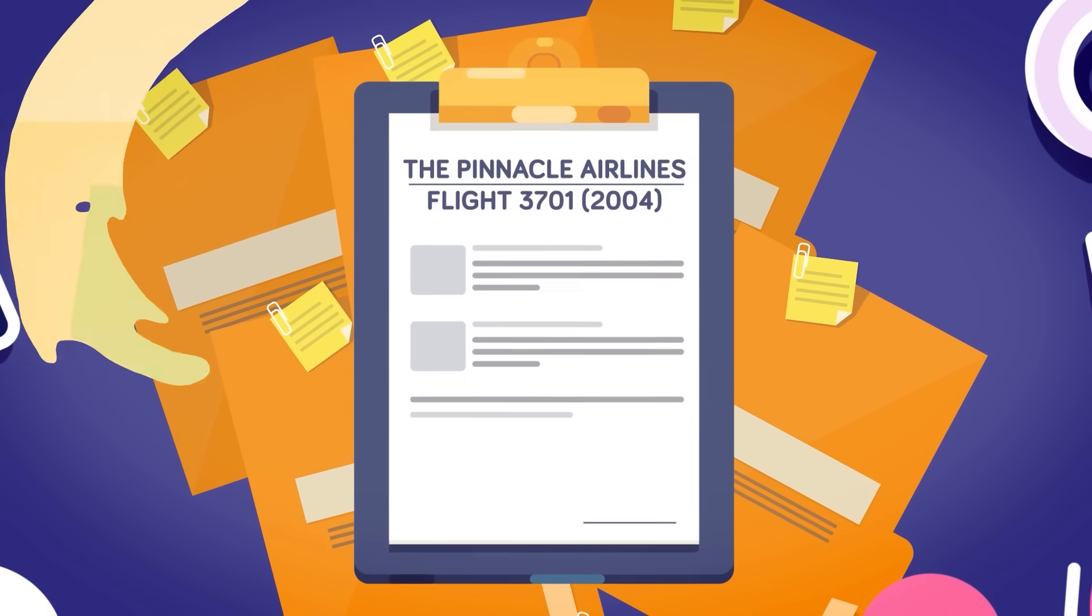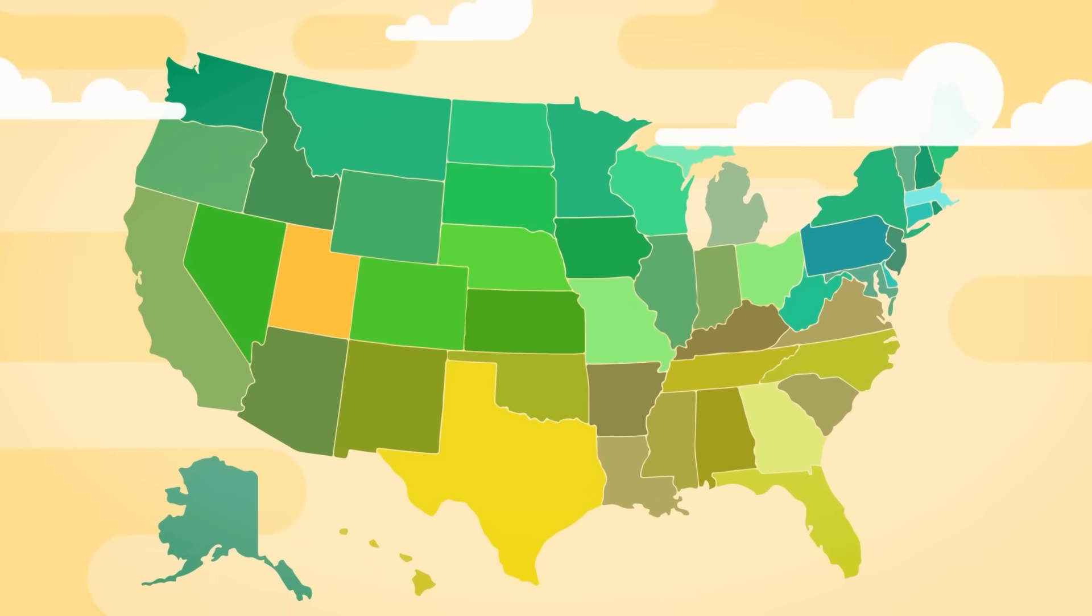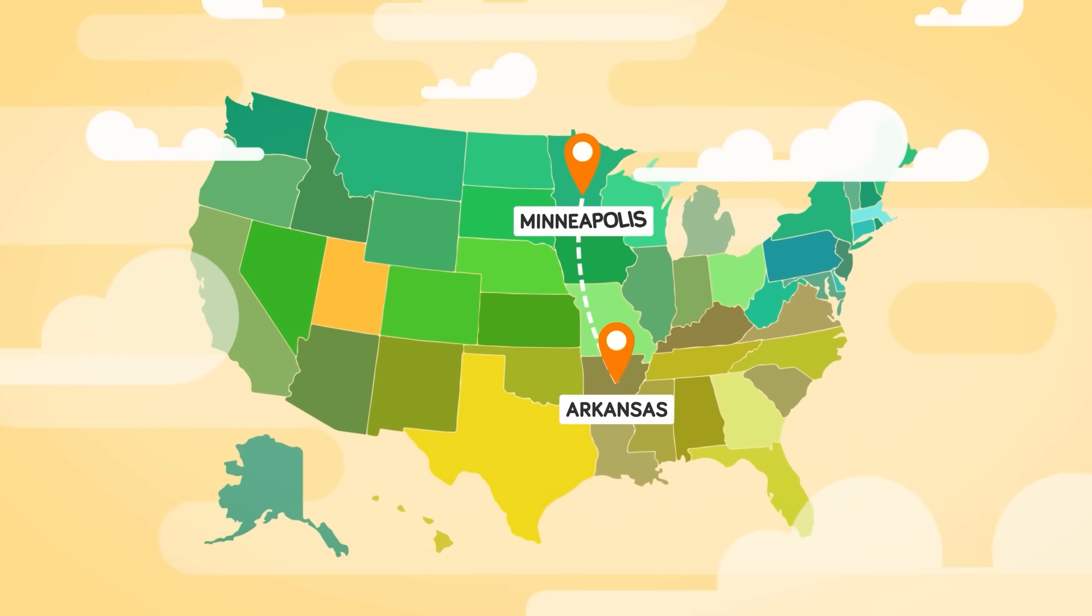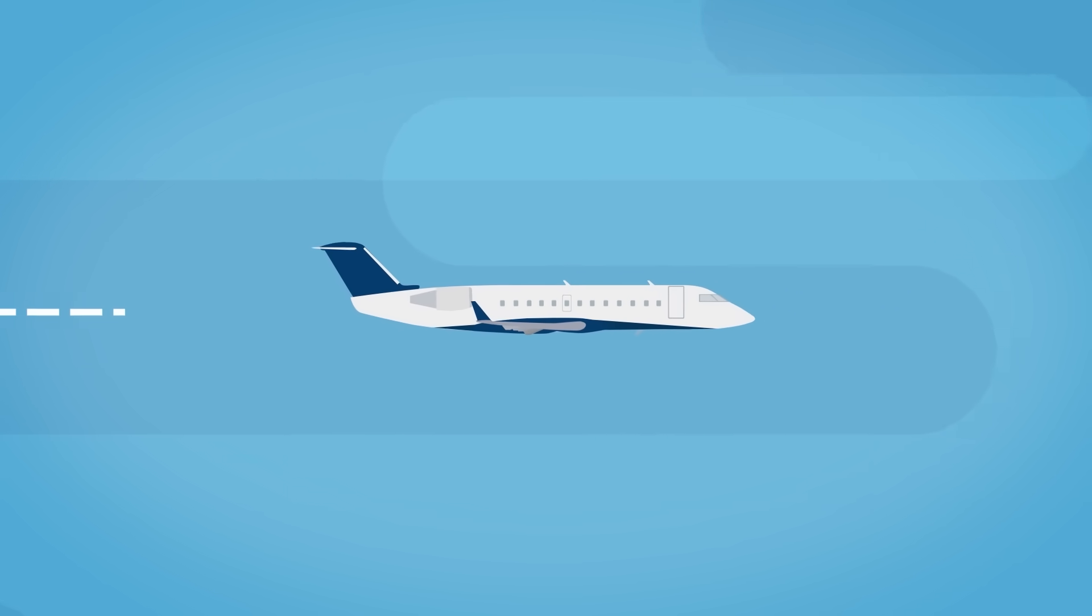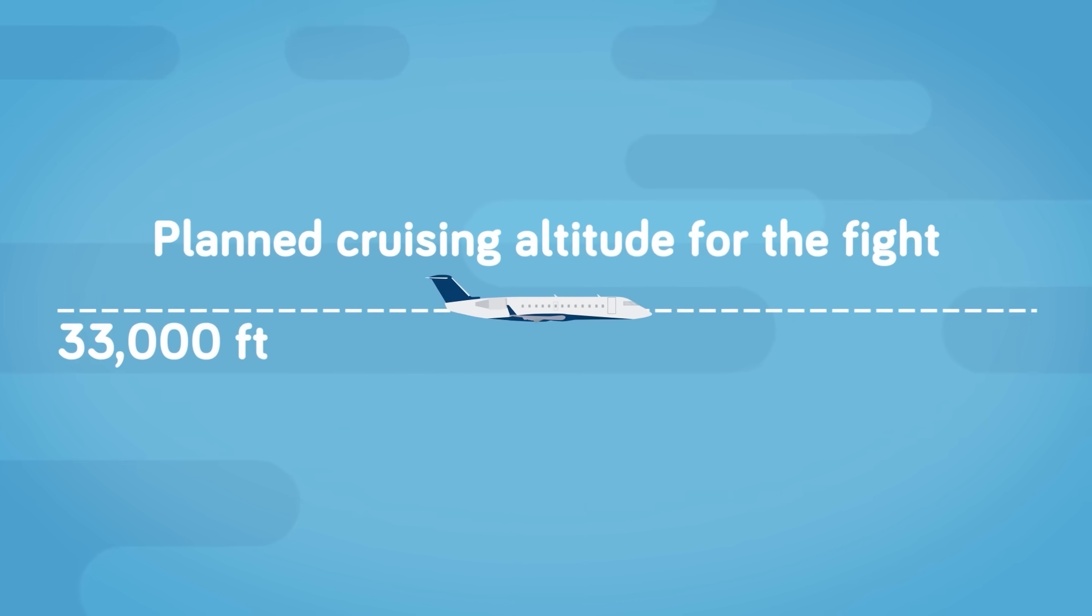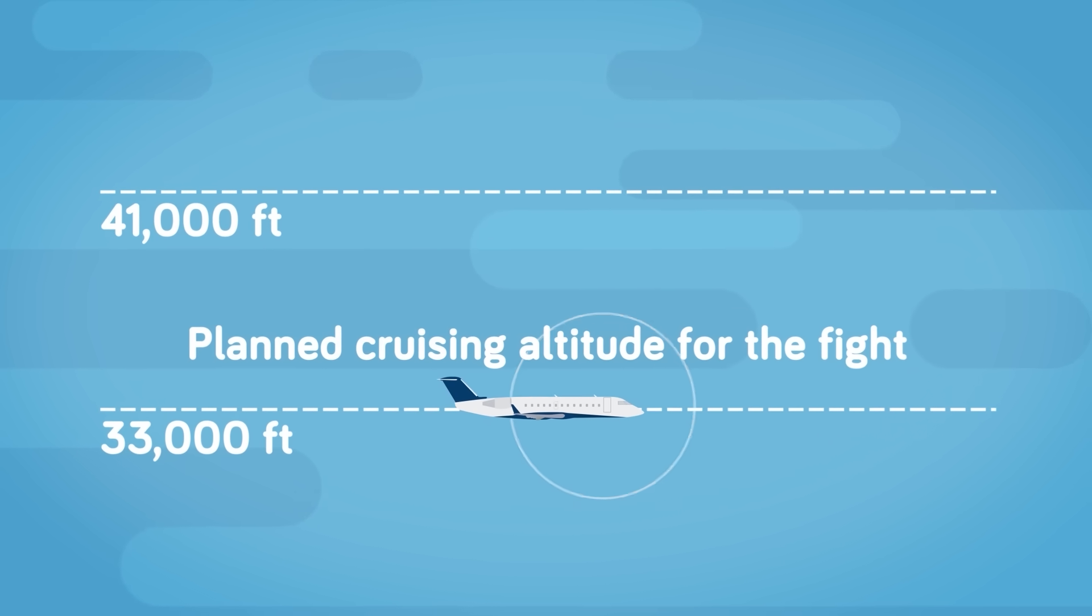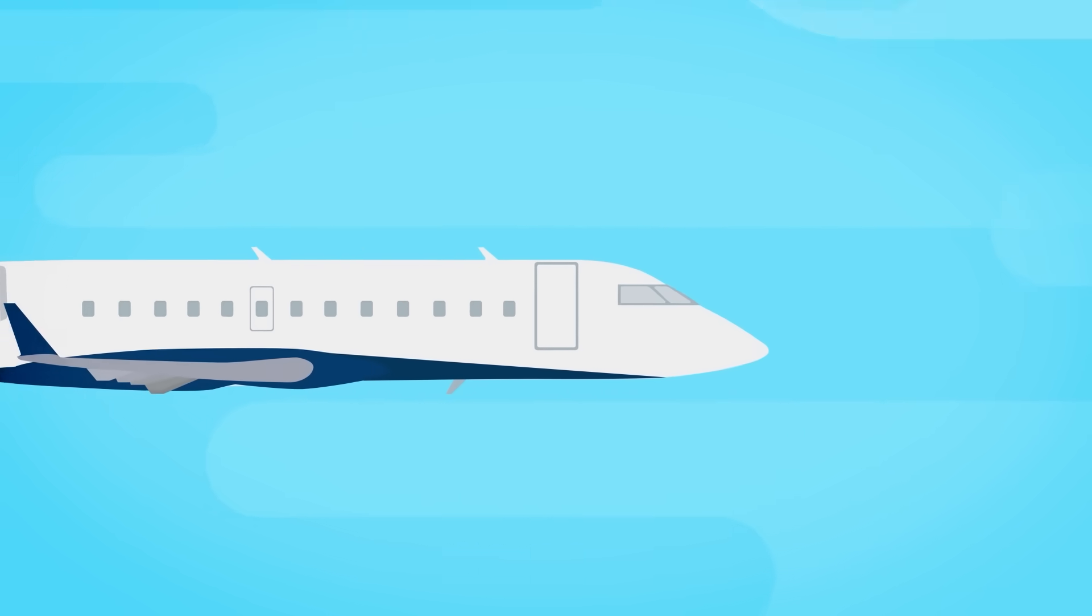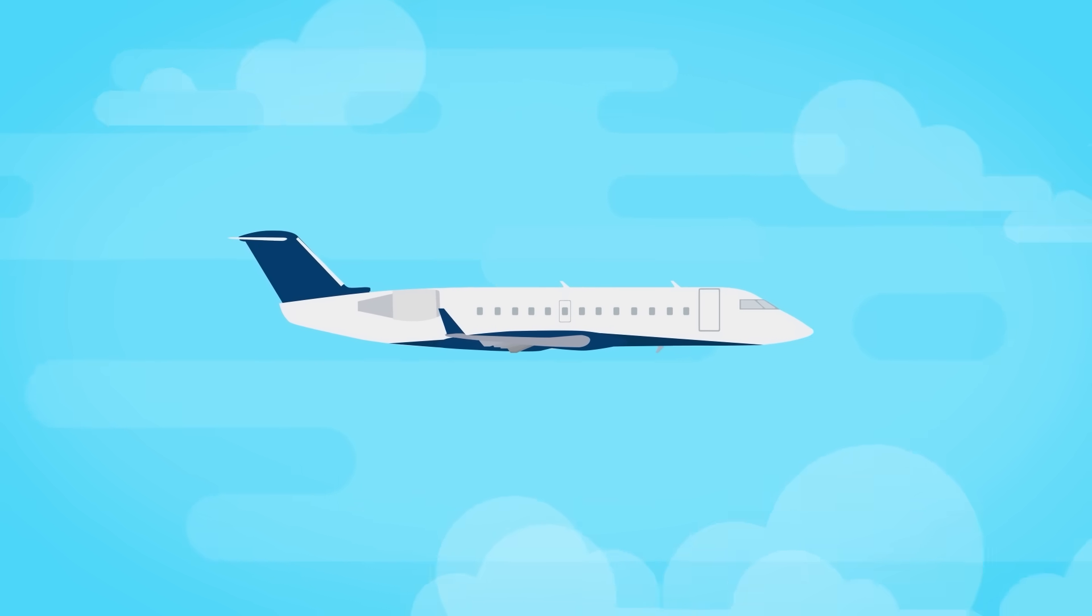On October 14, 2004, Flight 3701 was due to transport an empty 50-seat Bombardier CRJ-200 from Little Rock, Arkansas to Minneapolis. The planned cruising altitude for the flight was 33,000 feet, but shortly after the plane left its destination, it began to ascend rapidly. After only 14 minutes of flight, the pilots requested clearance to climb to 41,000 feet, the maximum operating altitude for the Bombardier CRJ series. They expressed to each other an eagerness to test the limits of the aircraft. Clearance was granted, and the plane quickly climbed to this ambitious new height.